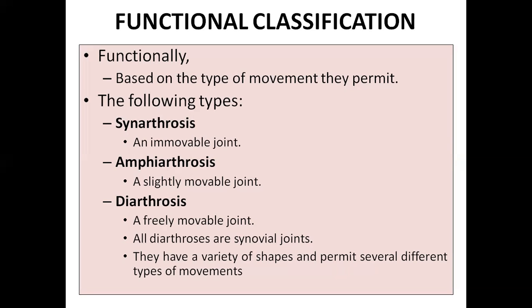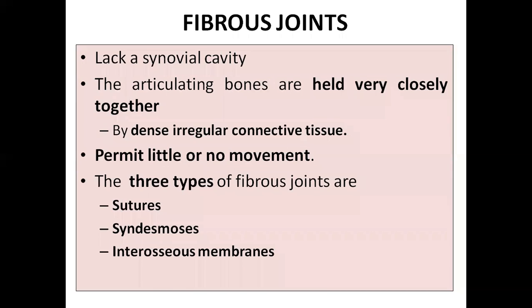Diarthrosis means a freely movable joint - like the synovial joint. Almost all synovial joints are diarthrosis. These are present at different locations, and you will see different varieties of shape of synovial joints and different kinds of movement. We're going to study about the movements as well. So now we're going to see in detail about each one quickly.